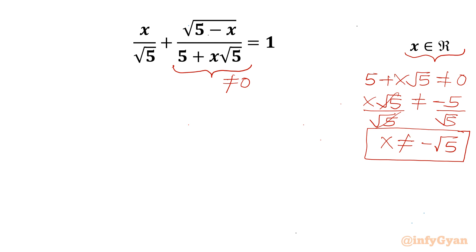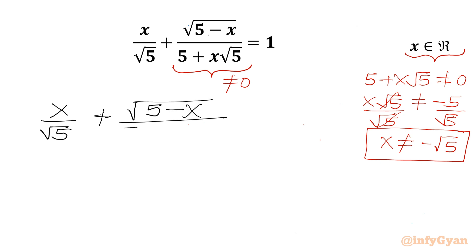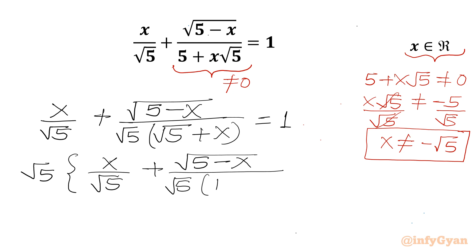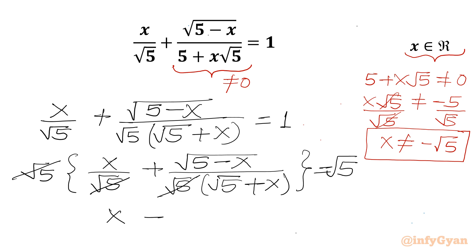Now I will consider our equation and take root 5 common. So I write x over root 5 plus square root of 5 minus x, divided by root 5 common, in bracket root 5 plus x, equal to 1. Multiplying both sides by root 5, we can cancel root 5 with the denominator. So x plus root 5 minus x over root 5 plus x equals root 5.